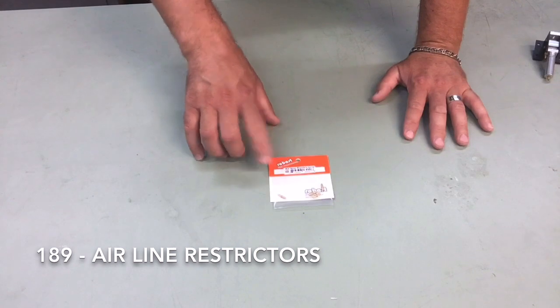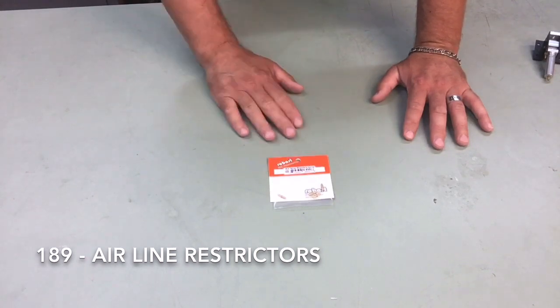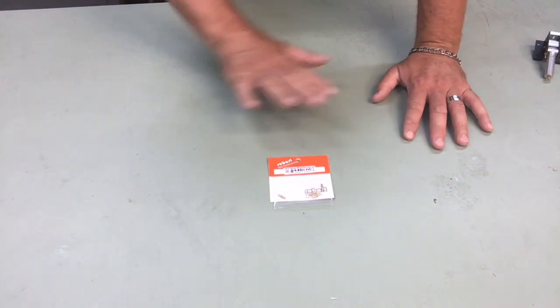So what we have here is part number 189. These are the airline restrictors. Let's go ahead and open the package, and I'll show you what you get.